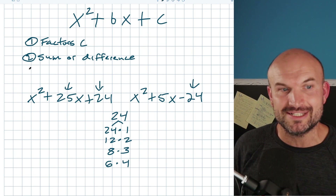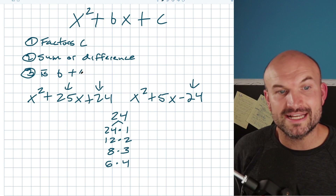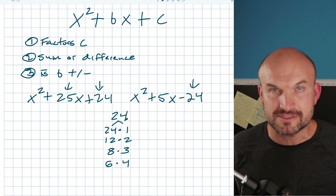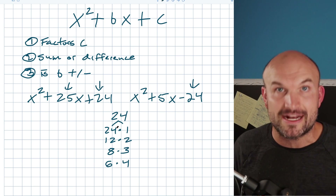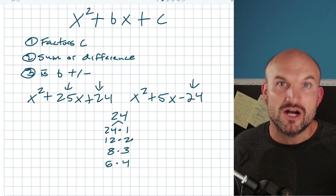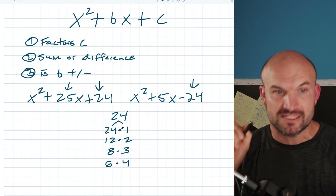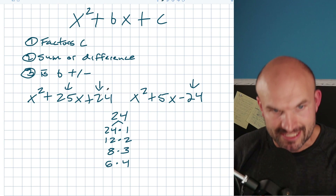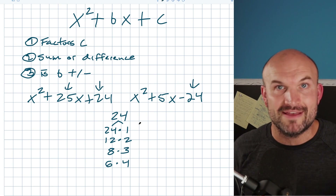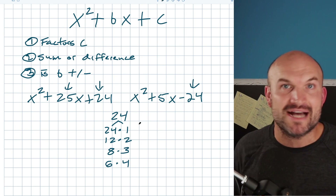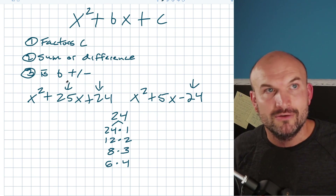That's not completely all we need for factoring — there's one more step. Step 3 is: is B positive or negative? Remember, I told you to only focus on the positive factors. But you should know that negative 24 and negative 1 also multiply to give you 24. If my B is positive and my factors are adding to give me positive 25, they both have to be positive. A negative 24 and a negative 1 would give me a negative 25 as a sum.